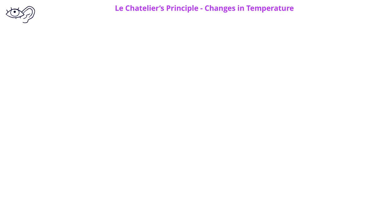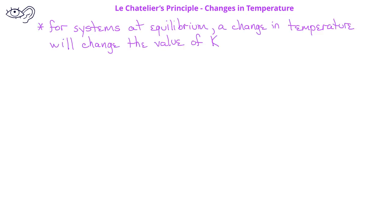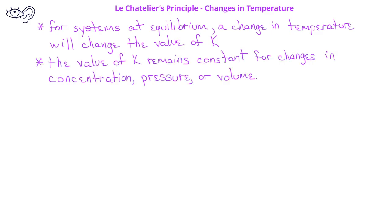When we look at changes in temperature and how they affect an equilibrium system, one thing that will be very different from other changes is that a change in temperature will change the equilibrium constant for the system. When we change concentrations of reactants or products, or when we change the volume or pressure of a system at equilibrium, there is no change to the equilibrium constant.